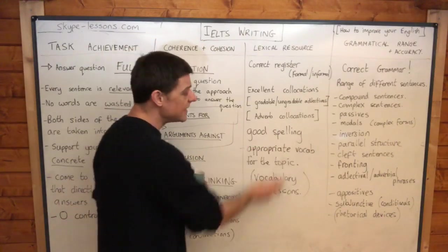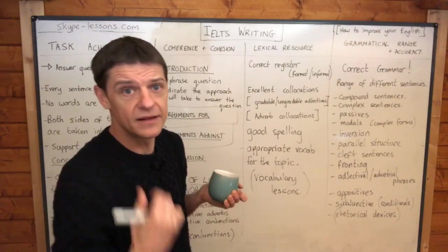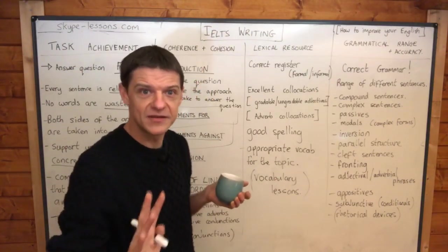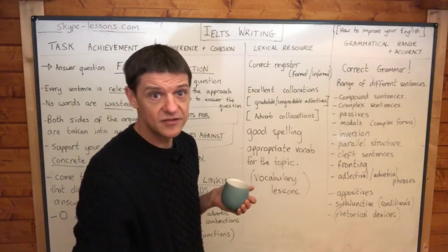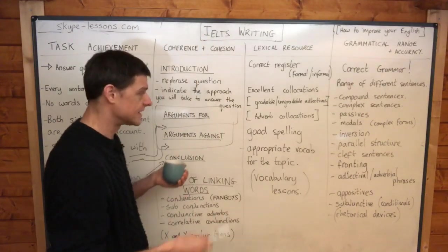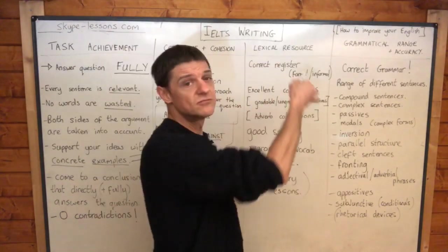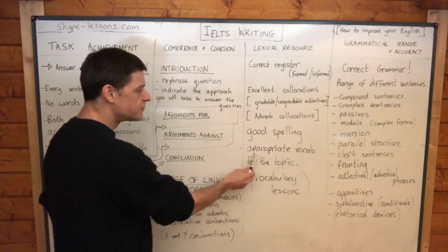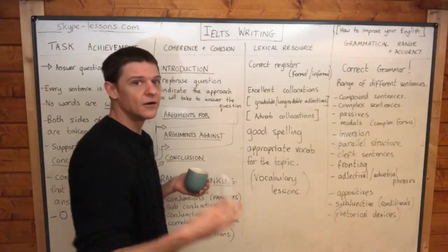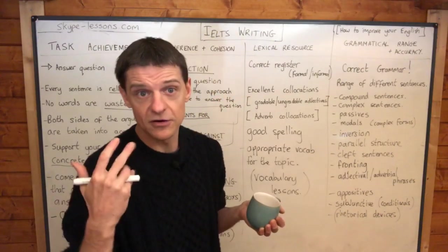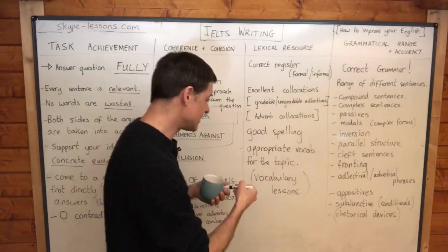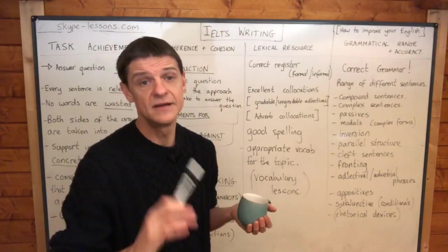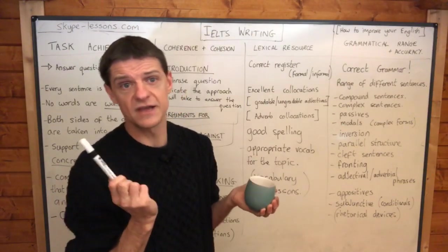Good spelling — unfortunately, English words are a nightmare. Try to be careful with your spelling because too many spelling mistakes will bring the mark down. The only way to improve is practice — keep writing essays, getting them marked, and write some more. Appropriate vocabulary for the topic is also important. If you're writing about the environment, you'll need a lot of environmental vocabulary. You can find this on my vocabulary lessons — I've got loads on different topics: crime, clothes, weather, environment. Watch those lessons and try to absorb as much of that vocabulary as you can.